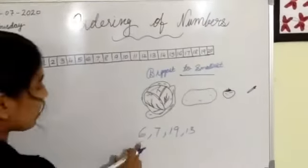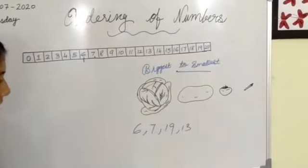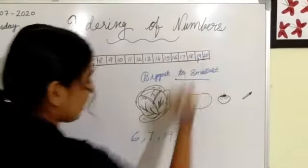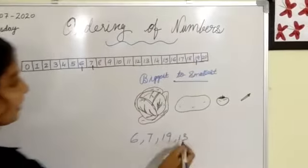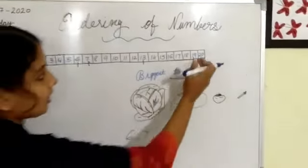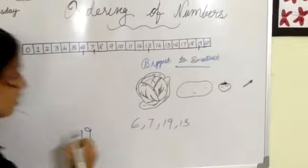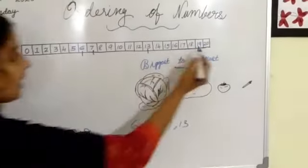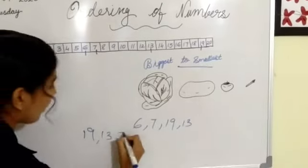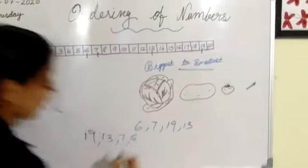Let us use the number strip to compare numbers and arrange them from biggest to smallest. The numbers are: 6, 7, 19, and 13. Mark them on the number strip. Which is the biggest number? Yes, it is definitely 19. So write 19 first, then 13, then 7, and finally 6. We get the answer: 19, 13, 7, 6.